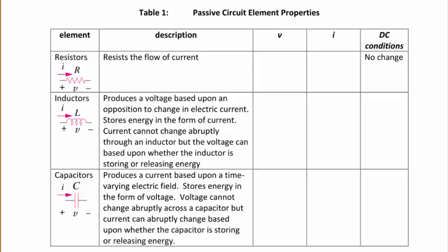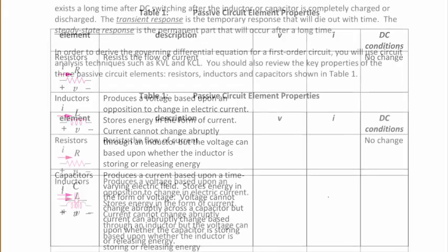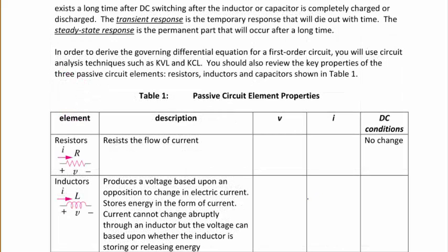In order to derive the governing differential equation for a first order circuit, you will use circuit analysis techniques such as Kirchhoff's voltage law and Kirchhoff's current law. You should also review the key properties of the three passive circuit elements — resistors, inductors, and capacitors — shown in Table 1. A resistor resists the flow of current, and the relationship between voltage, current, and resistance is Ohm's law: V equals I times R, or I equals V over R, and under DC conditions there is no change for a resistor.